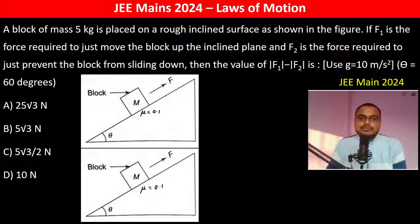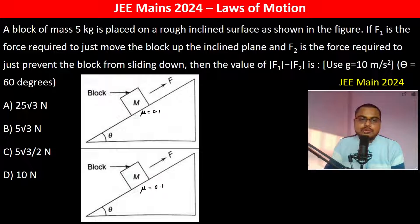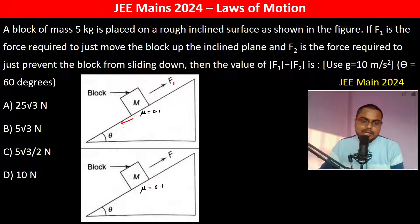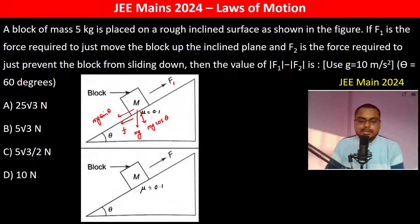A block of mass 5 kg is placed on a rough inclined surface. F1 is the force required just to move the block up the inclined plane. F1 is directed up the incline. The weight component along the incline is Mg sin theta, and the normal force component is Mg cos theta.